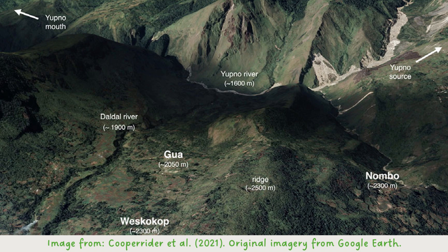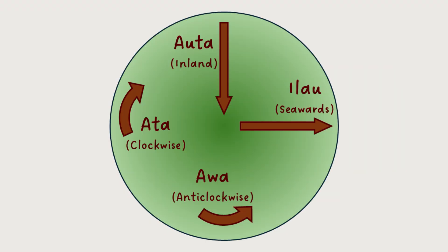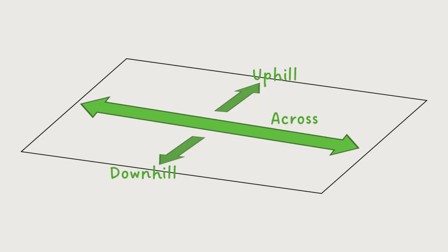The Yupno Valley is carved out by the Yupno River, which is fed into by a number of tributaries, each of which forms a little side valley. Their system of spatial understanding stems from these surroundings. Rather than the cardinals of Gugu Yimite or the land-sea axis of Manam, the Yupno use an uphill-downhill distinction, where all directions are defined as uphill, downhill, or across the hill. This distinction surfaces in a few different ways, such as in demonstratives.